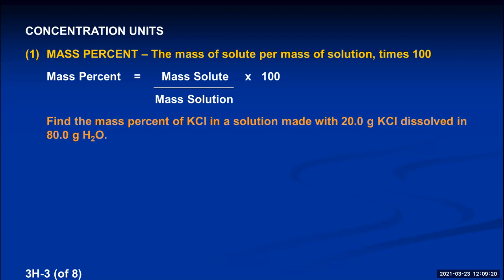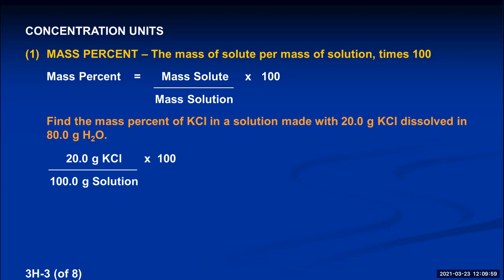Let's find the mass percent of KCl in a solution made with 20.0 grams of KCl dissolved in 80.0 grams of H₂O. A common mistake is dividing 20 by 80 and getting 25% — but that's mass of solute divided by mass of solvent, not solution. You have to remember the solution is the combination of solvent and solute, so you add 80 and 20 to get 100 grams total. The correct mass percent is 20 grams of KCl divided by 100 grams of solution, giving a fraction of 0.200, and multiplied by 100 equals 20.0%.